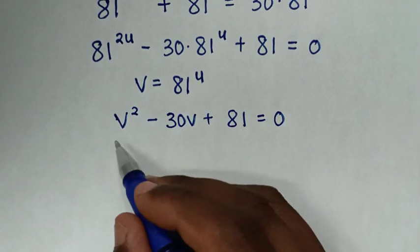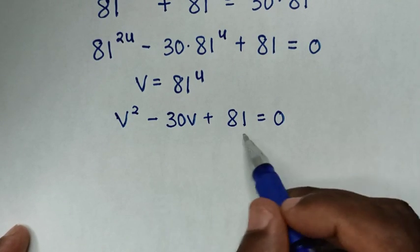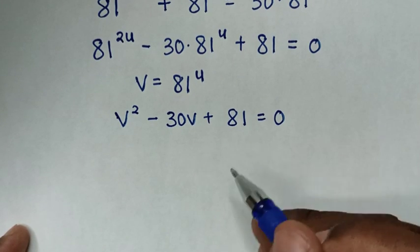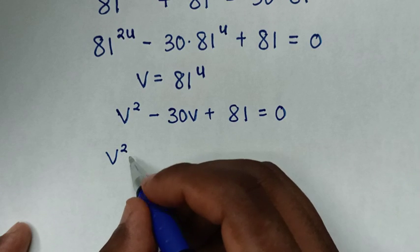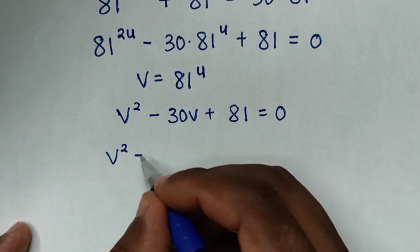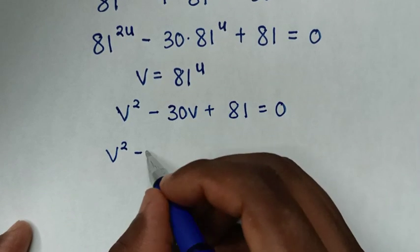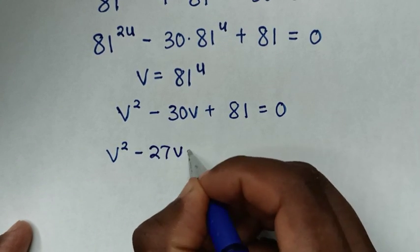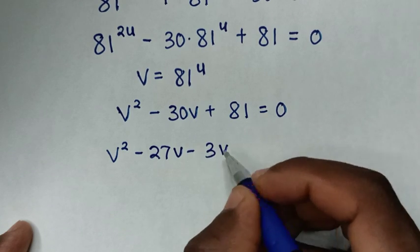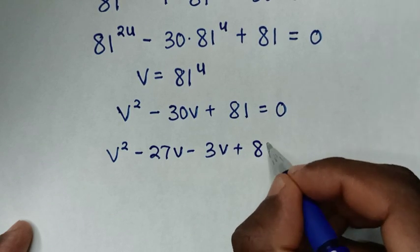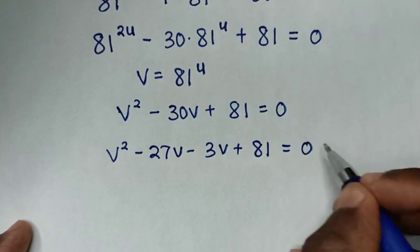We solve this quadratic equation by grouping and factorization. We split −30v as −27v − 3v, giving v² − 27v − 3v + 81 = 0.